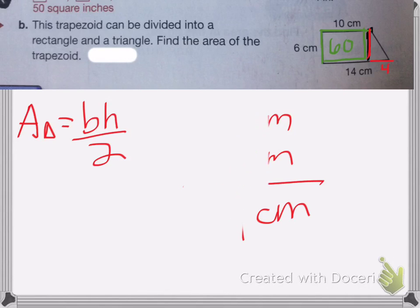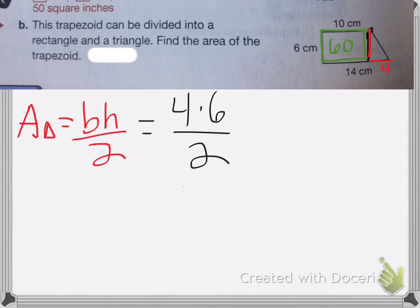So to find the area, I'm going to do base, 4 times height, 6, divided by 2. Cancel out. 2 becomes a 1. 4 becomes a 2. I end up with 2 times 6, which is 12 centimeters squared.